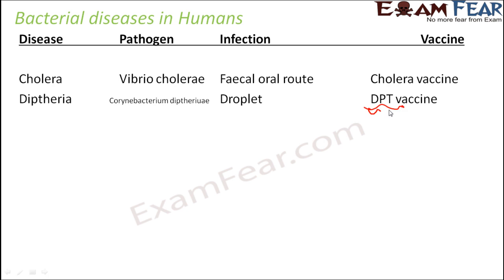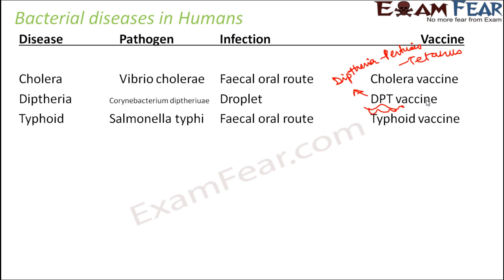DPT stands for Diphtheria, Pertussis, Tetanus. The same vaccine is also useful to prevent tetanus — it is one vaccine for all three. Typhoid is also known as enteric fever and is caused by the pathogen Salmonella typhi. The infection spreads through the fecal-oral route, and the vaccine available is the typhoid vaccine.